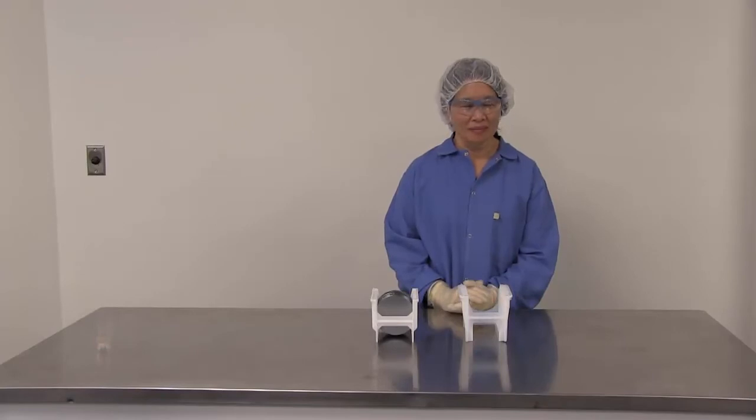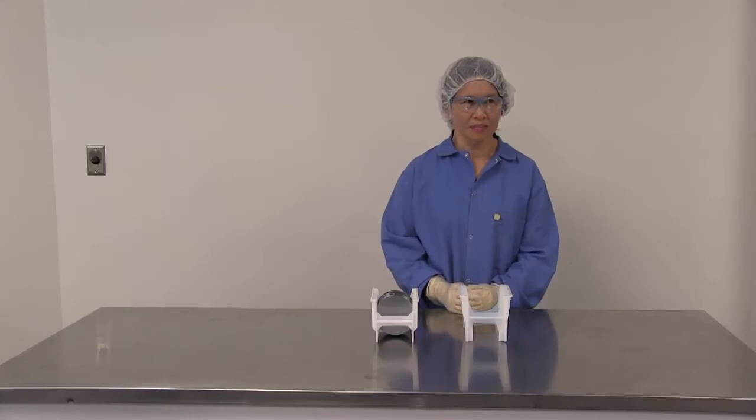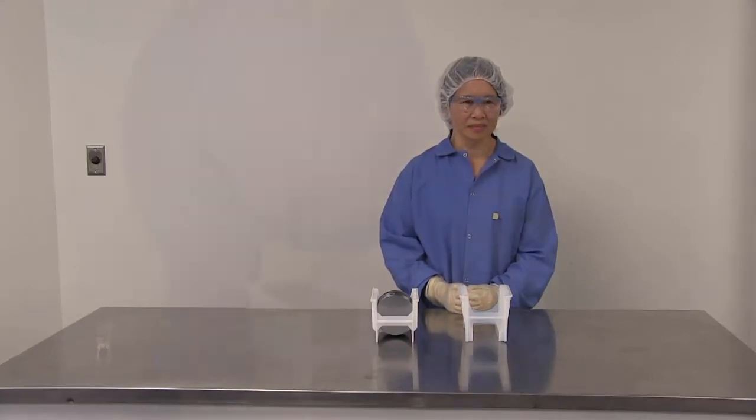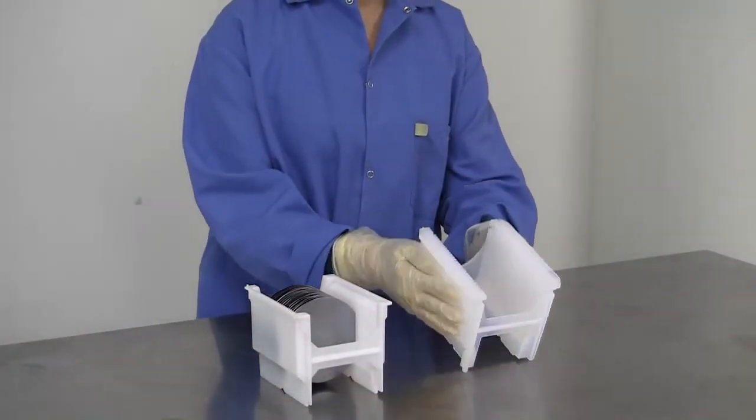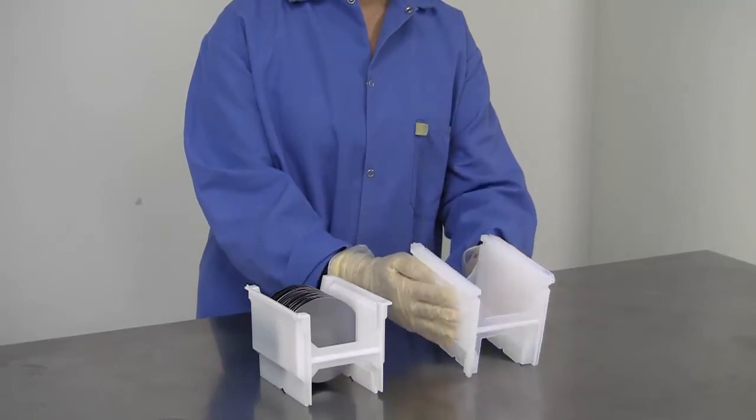One can also transfer wafers from one cassette to another using the roll transfer method. This can be done to transfer many wafers at once. We will now demonstrate how this is done. First, obtain an empty receiver cassette. Make sure it is the appropriate kind and level of cleanliness needed for your process.